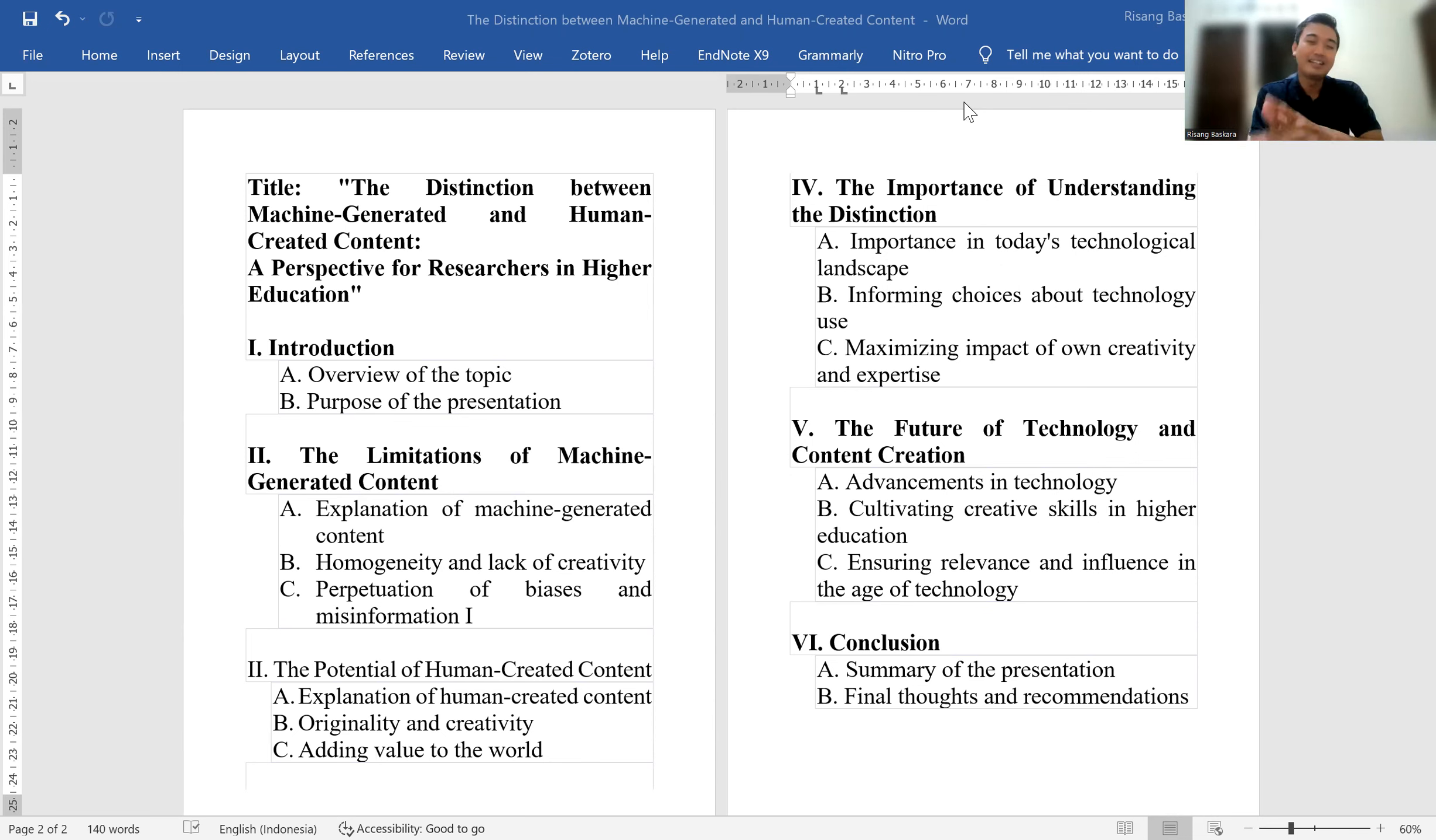The topic at hand is the role of technology in content creation and the distinction between machine-generated and human-created content. With the advancement in artificial intelligence and machine learning, it is becoming increasingly important to understand the limitation and potential of technology-generated content. This discussion aims to provide a more nuanced perspective on the matter.